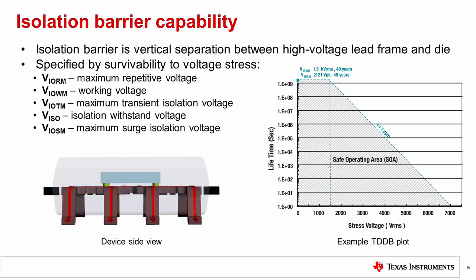These parameters represent the isolation barrier's ability to handle high voltage stresses of different magnitude and transient profiles and have a direct mapping to realistic operating situations. The first two specs, maximum repetitive voltage, VIORM, and working voltage, VIOWM, are both intended to quantify the ability of an isolator to handle high voltage across its barrier on a continuous day-to-day basis throughout its lifetime. The plot on the right shows an example of time dependent dielectric breakdown, or TDDB. The safe operating area, or SOA, shown as the region under the dashed blue line, defines the combination of voltage and lifetime, which will result in failure rates of less than one part per million. The device in this example achieves a working voltage of 1.5 kilovolts RMS and maximum repetitive voltage of 2.1 kilovolts peak for 40 years.